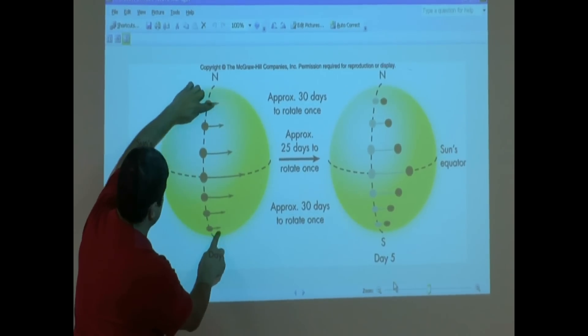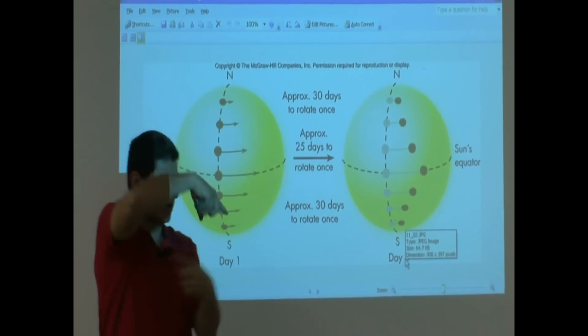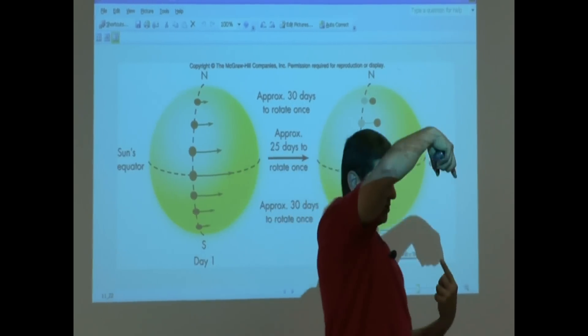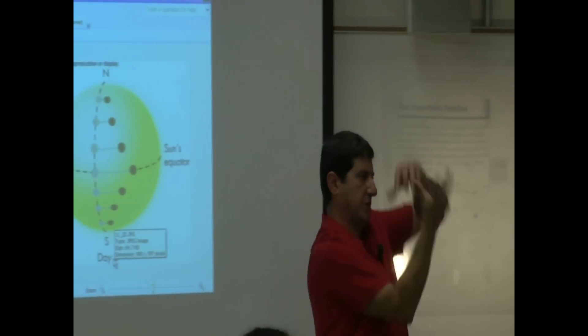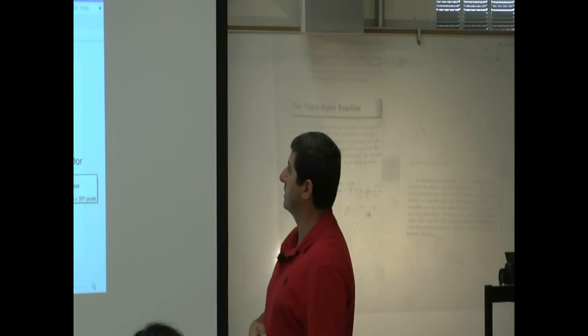And so when that happens, this middle part rotates quicker, and then the outer parts rotate slower, so it's going to cause a lot of convection currents. And then that's going to create very strong magnetic field.